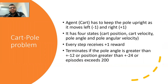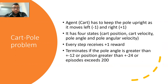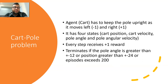So what is the cart-pole problem? In this problem, the agent — the cart — has to keep the pole upright as it moves left (negative one) or right (plus one). It has four states: cart position, cart velocity, pole angle, and pole angular velocity. Every step receives a plus one reward, and it terminates if the pole angle is greater than plus or negative 12 degrees, or the cart position is greater than plus or negative 2.4, or if the episode exceeds 200 steps, because that's when it reaches the highest average reward.